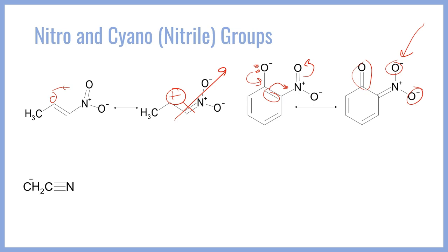The other group to consider is the cyano group, also called the nitrile group. That is the C-triple-N bond attached to an organic molecule, and it is very similar to the cyanide ion. Let's consider this molecule, which is cyanomethane or methane nitrile, but we're going to make it an anion by putting a negative charge on that carbon by removing one of those protons.